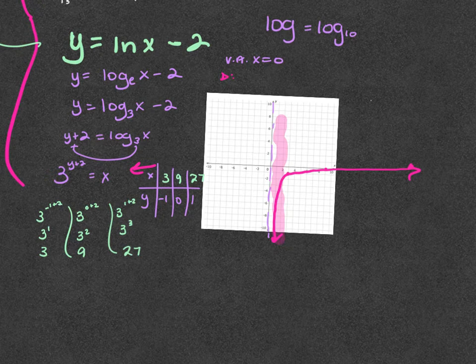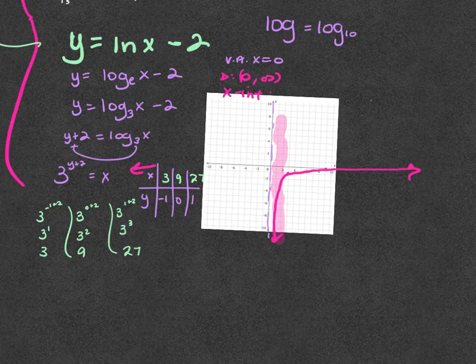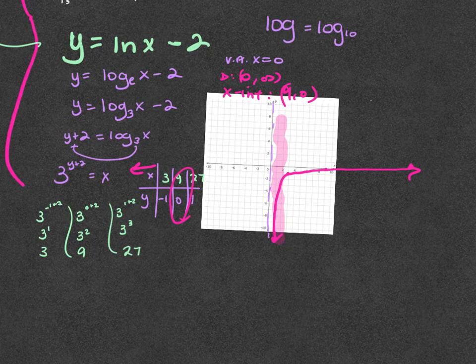The domain is zero to positive infinity. The x-intercept is not exact because we're approximating, but it's approximately (nine, zero). In exact form it would be e squared, but you can approximate it.